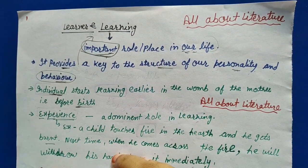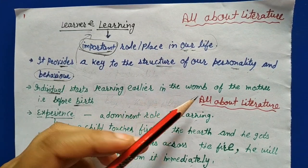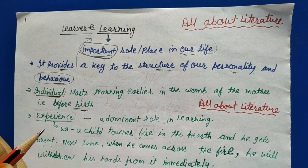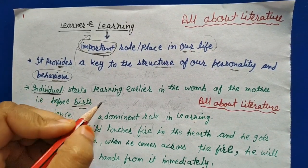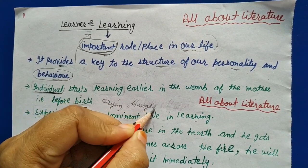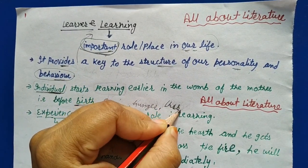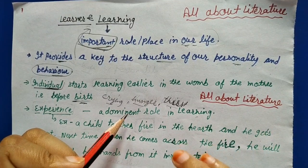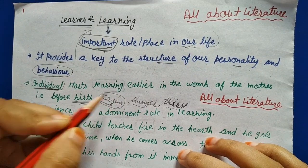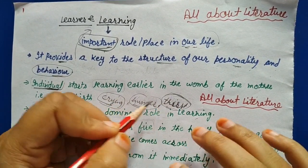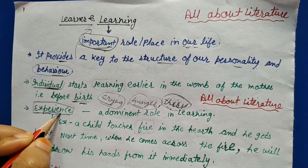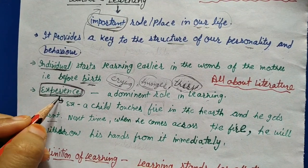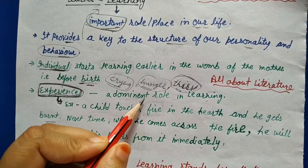We all adopt things — that is learning. An individual starts learning earlier, even in the womb of the mother, that is before birth. Things like crying, hunger, and thirst are inborn qualities. We say inborn because after birth they don't adopt these things — these are qualities learned before birth. Experience plays an important role in learning; what we experience and how we experience shows in our learning.